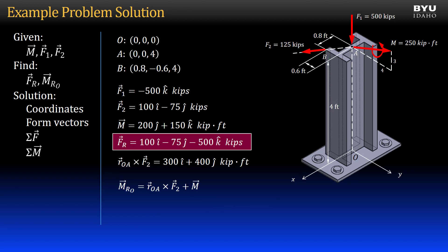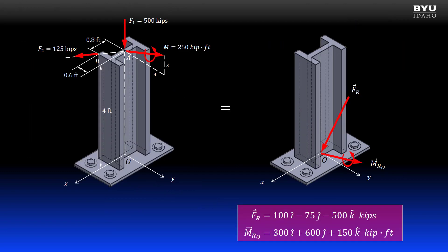Now, I get the resultant moment by adding the moment caused by F2 to the given moment at point A, which is a free vector, by summing the components independently. I get a resultant moment at point O as 300i plus 600j plus 150k kip feet.